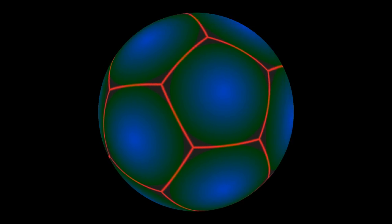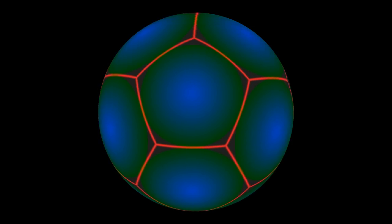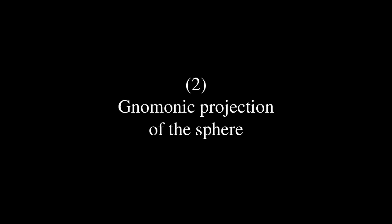Now let's switch to a different projection of the same pattern on the same sphere. What we see here is known as the gnomonic projection of the sphere, or sometimes the central perspective. Imagine the sphere is translucent and we put a light bulb in the center and a screen in front — then the projection onto the screen will be the gnomonic projection. Equivalently, we can just think of it as viewing the sphere from its center, except in this case it rotates in the opposite direction.